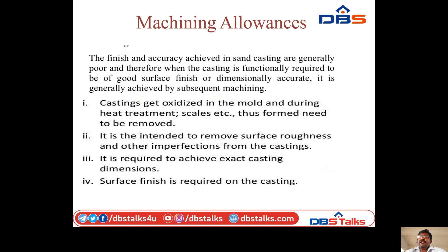Next, machining allowance. The finish and accuracy achieved in sand casting are generally poor. When the casting is functionally required to have a good surface finish or be dimensionally accurate, the casting gets oxidized in the mold during heat treatment. Extra casting dimension is required to remove surface roughness and improve the casting surface finish.